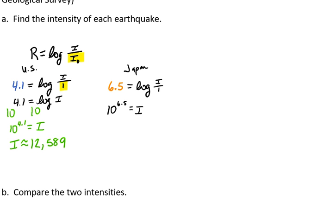Using the same method as we did for the United States, we get 10 raised to the 6.5 is I. Plugging that into our calculator, we get 3,162,278.